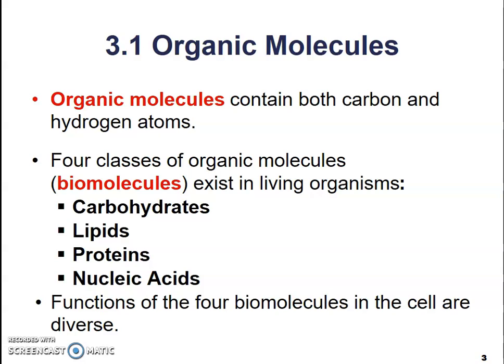Organic molecules contain both carbon and hydrogen atoms. There are four classes of these biomolecules: carbohydrates, lipids, proteins, and nucleic acids. The functions of the four biomolecules in cells are extremely diverse, and we're going to discuss them later on in this chapter.